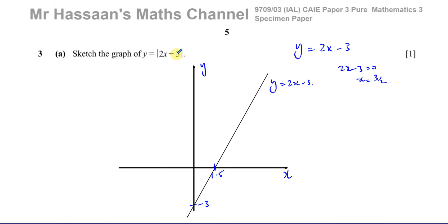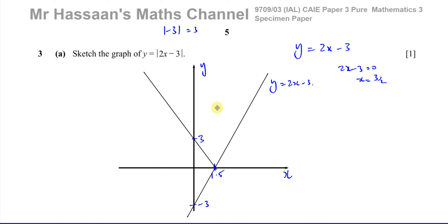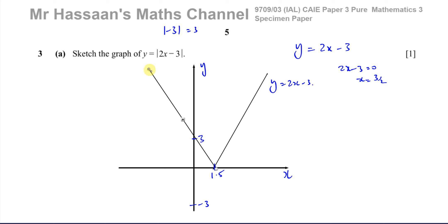What's going to happen is this part of the graph below the x-axis is going to reflect in the x-axis. So the portion that was negative gets flipped up. When you're drawing the modulus function and the whole expression is inside the modulus sign, whatever is below the x-axis is reflected in the x-axis to the positive side — all those negative y-values now have the same x-values but with positive y-values.